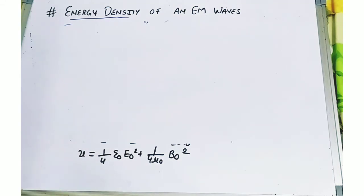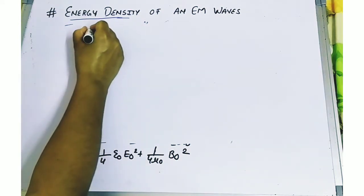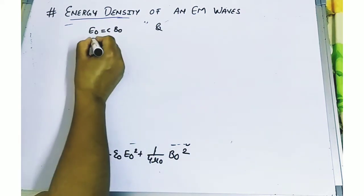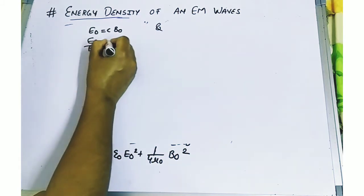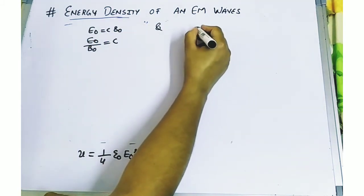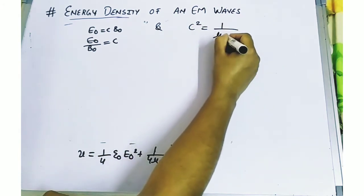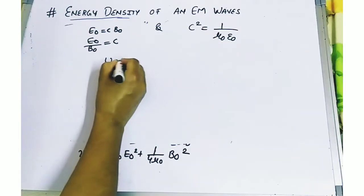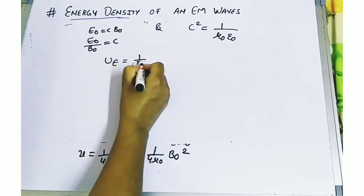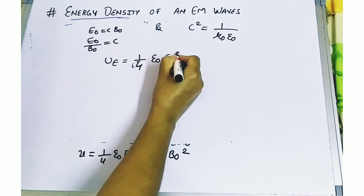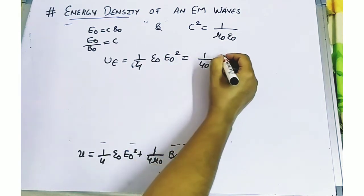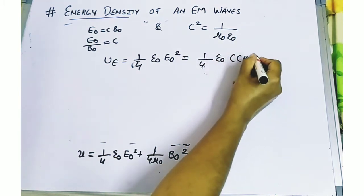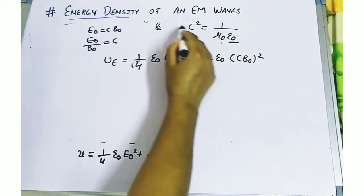We already know the property that E naught equals c times B naught, or equivalently E naught upon B naught equals c. We also know from the theory of relativity that c squared equals 1 upon mu naught epsilon naught. So the electric energy density term becomes: one-quarter epsilon naught times (cB₀)² .